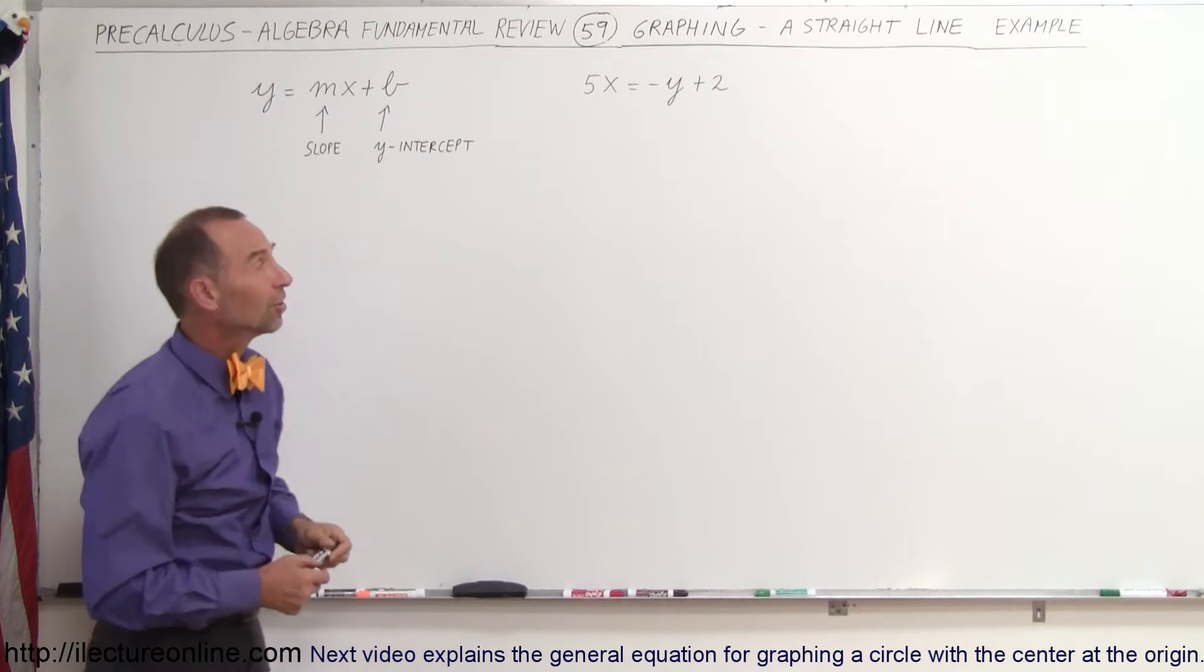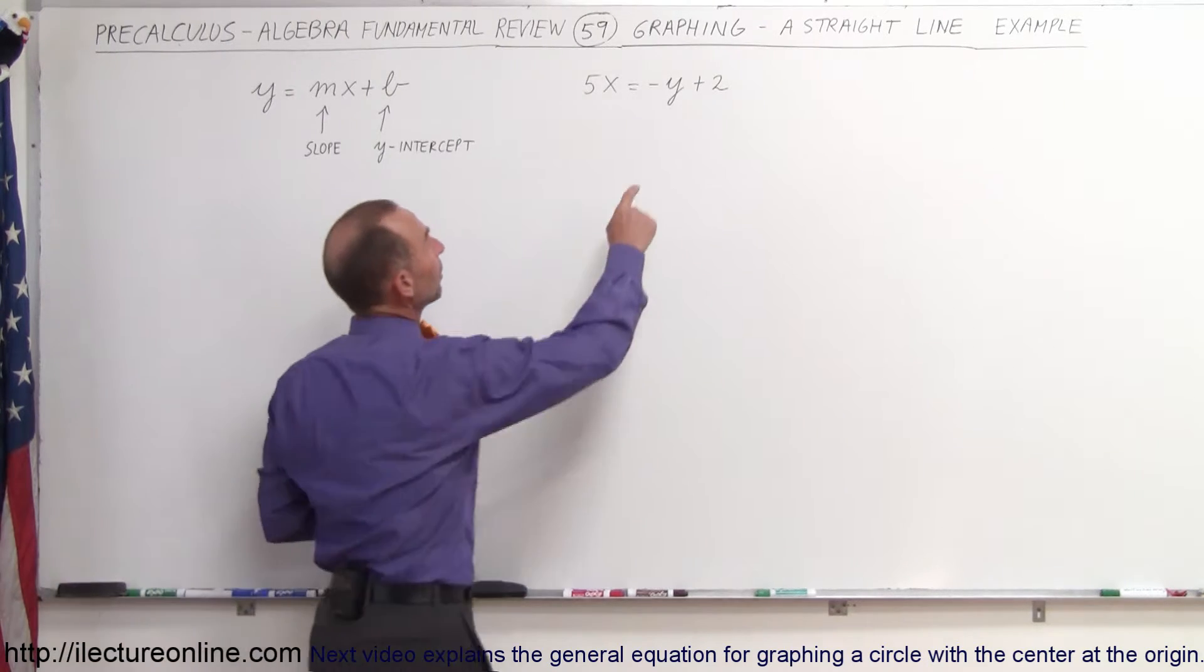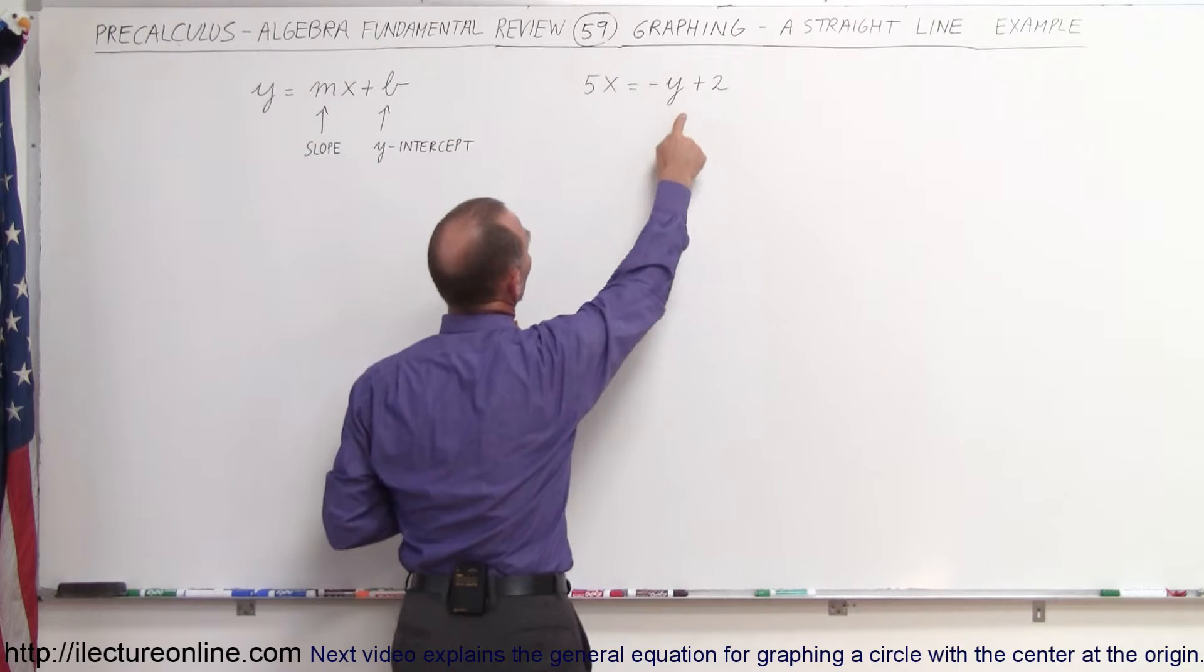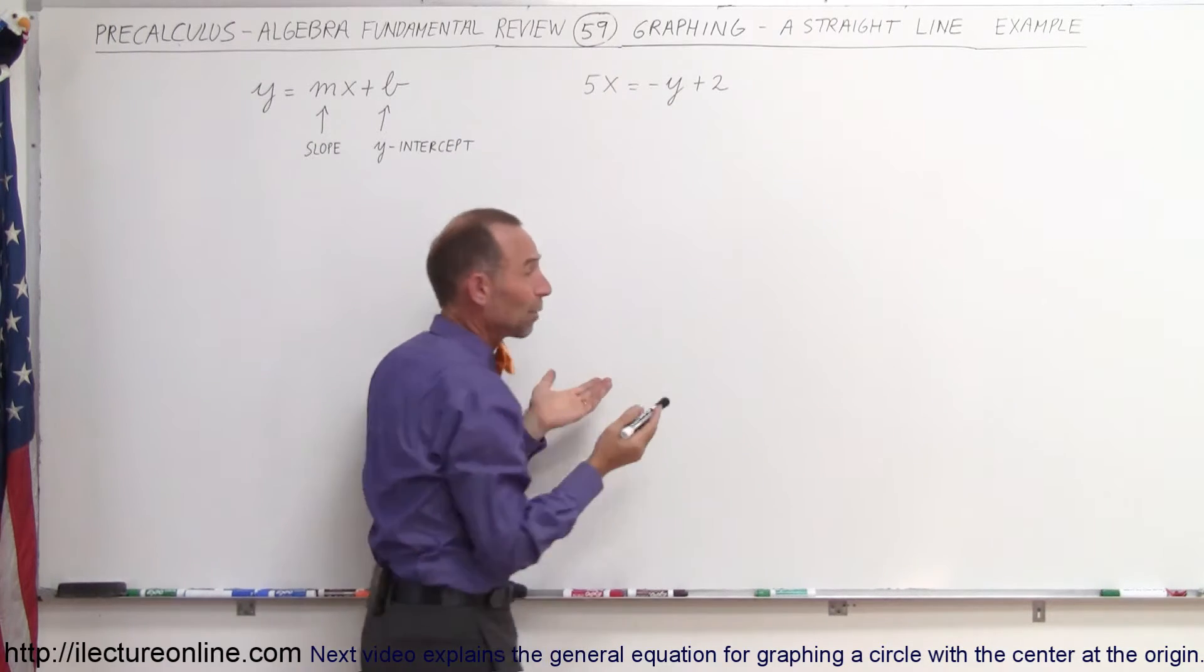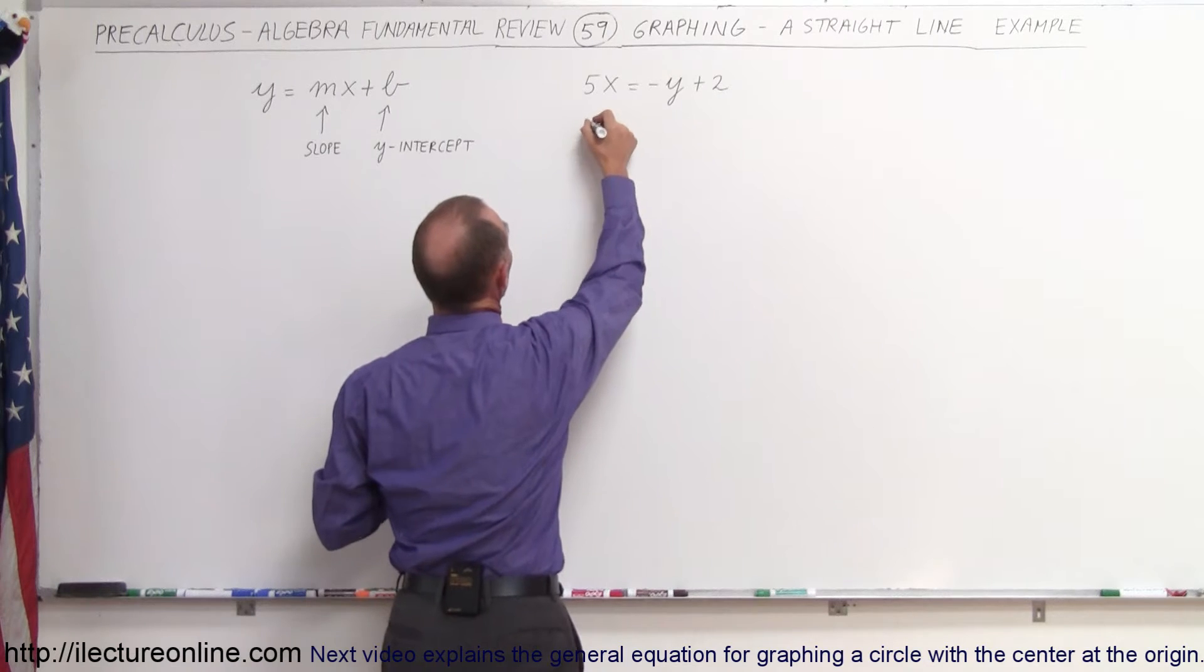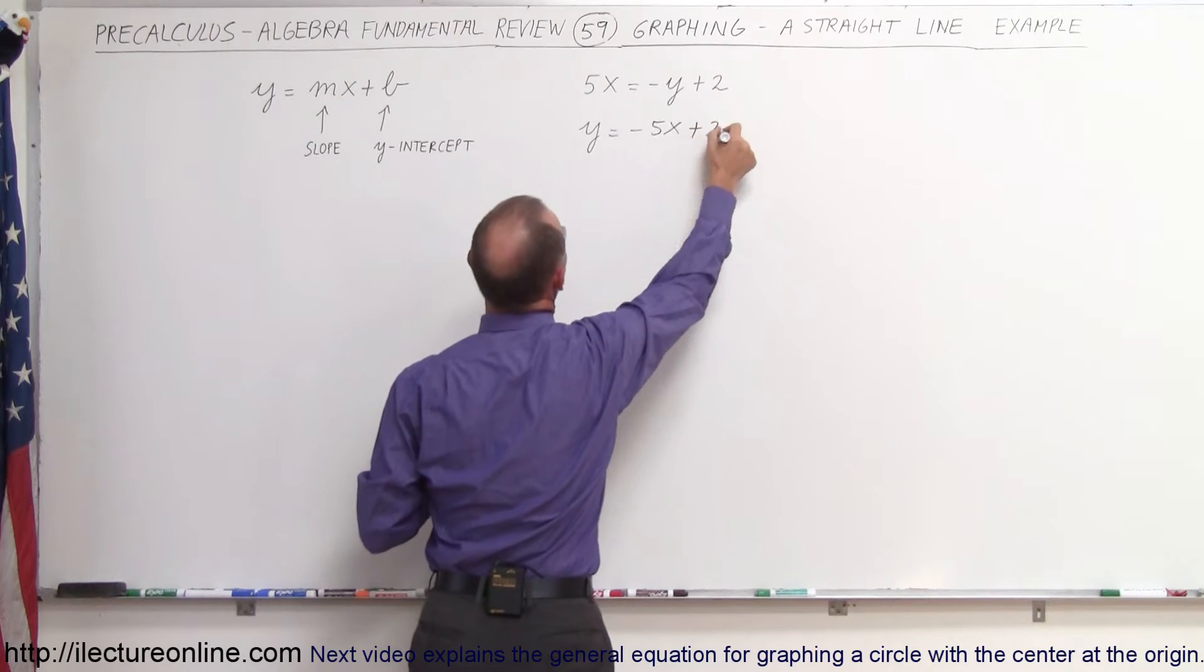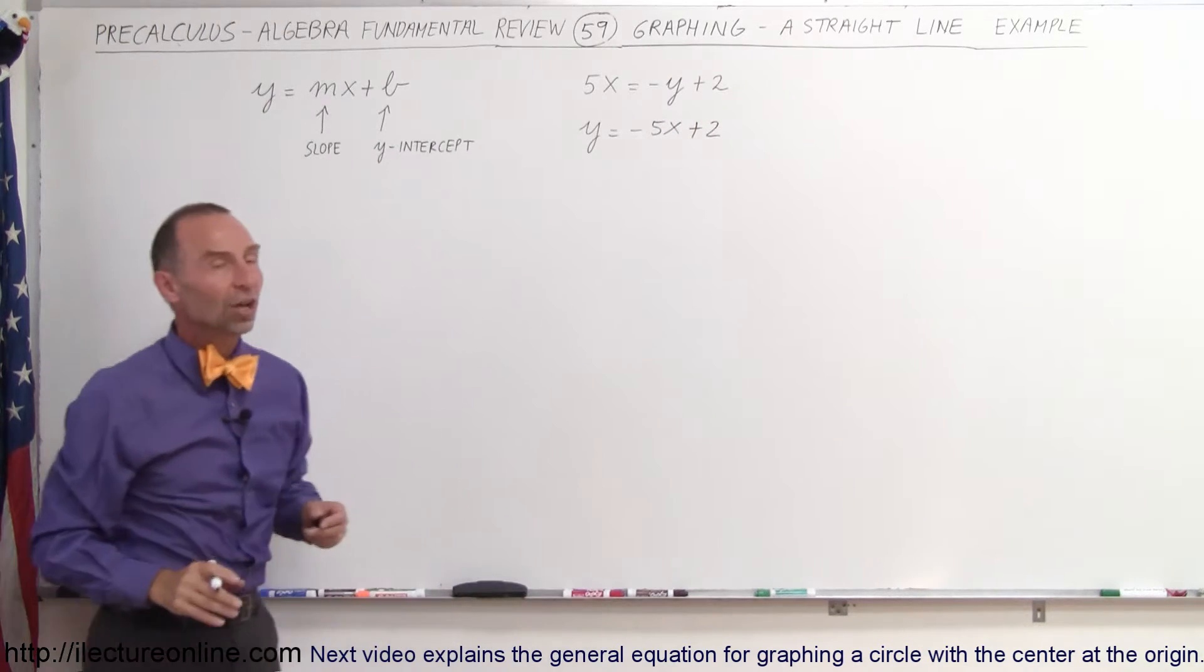You can see clearly that's not the case in this example. So we want to rearrange the terms, bring the y over to the left side, the 5x to the right side. When we do that, remember whenever we cross the equal sign, the sign changes. That means this becomes a positive y equals minus 5x and the plus 2 stays the same, stays on the right side, doesn't change.